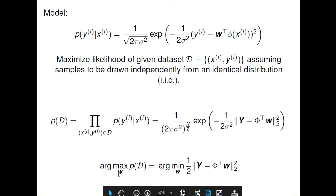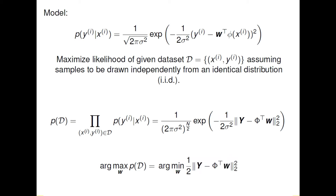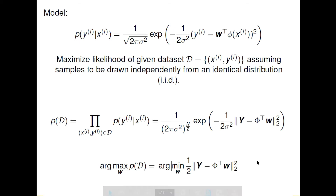We are trying to find w so that p(D) is maximized. Since there is a minus sign in the exponent, we can change this maximization problem into a minimization problem and find the optimal parameters w that minimize this error. This formulation is exactly the same as the least squared errors approach, but the way of deriving it is different.